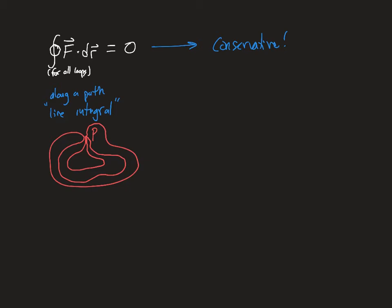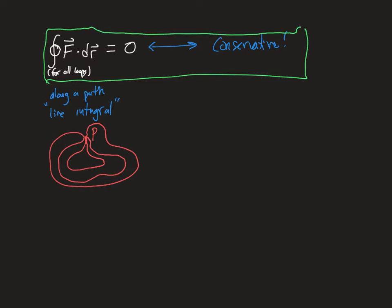What's even better is that there's a reverse statement: not only does the loop integral being zero imply the force is conservative, but if the force is conservative, then the loop integral must be zero. This is a very powerful theorem in theoretical mechanics and mathematics. The conservative force is characterized by the fact that the loop integral is zero for any loop you pick. This is what I really want to prove in this video, and what's nice is it doesn't require a lot of complex mathematics — just logical thinking about what it implies for all loop integrals to be zero.